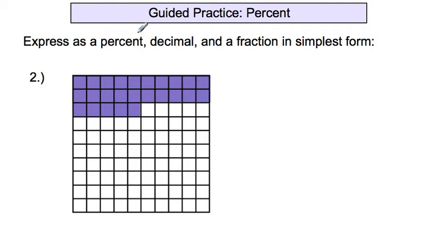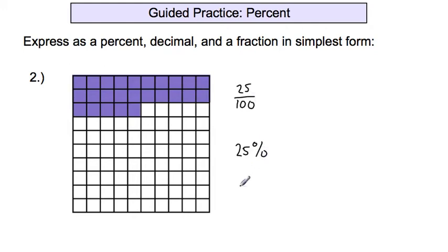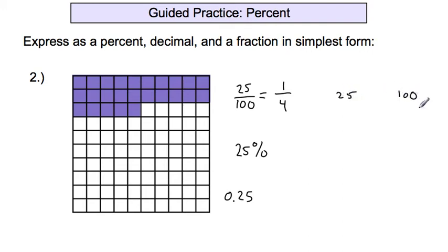Second guided practice: going from fraction to decimal to percent. I'll find the fraction first. There are two rows of 10 plus 5, which equals 25 shaded in out of 100. That equals 25 percent, because percent means out of 100. As a decimal, it's 0.25 — that's 25 hundredths. This isn't in simplest form; the greatest common factor is 25, so dividing gives 1 over 4.